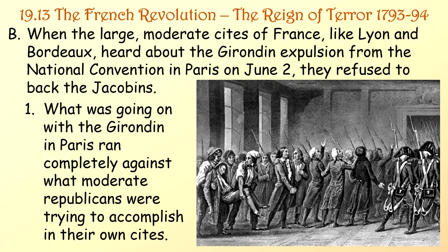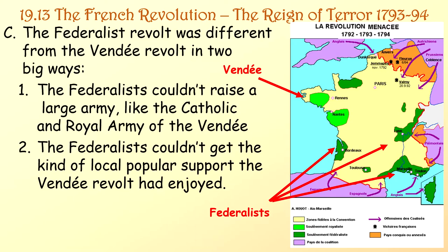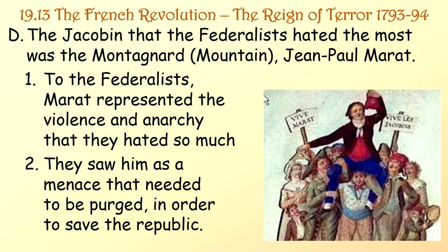When the large, moderate cities of France like Lyon and Bordeaux heard about the Girondin expulsion from the National Convention in Paris on June 2nd, they refused to back the Jacobins. The Federalist Revolt differed from the Vendée Revolt in two ways: the Federalists couldn't raise a large army like the Catholic and Royal Army of the Vendée, and they couldn't get the same level of local popular support. The Jacobin that Federalists hated most was the Montagnard Jean-Paul Marat. To the Federalists, Marat represented the violence and anarchy they hated, and they saw him as a menace that needed to be purged to save the Republic.